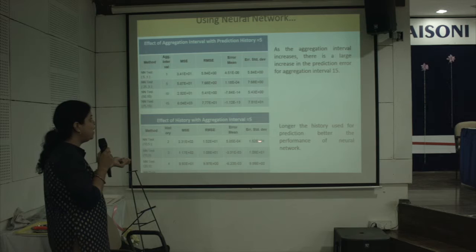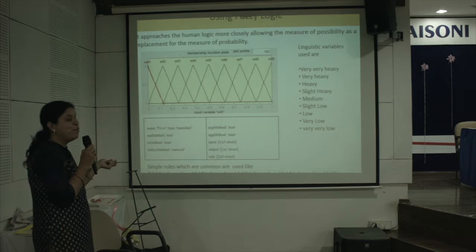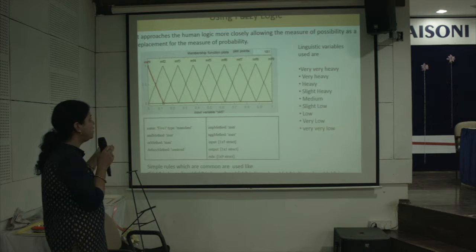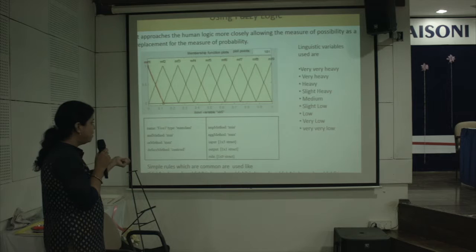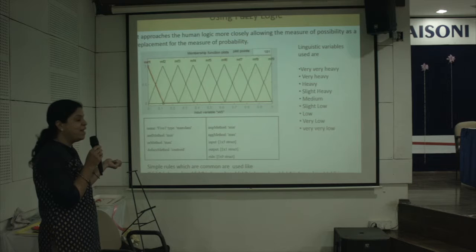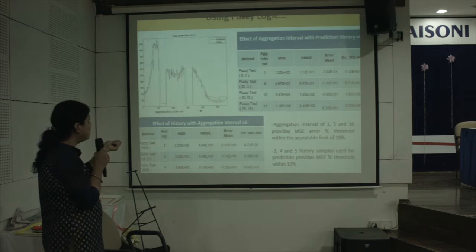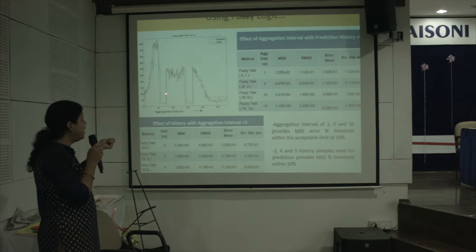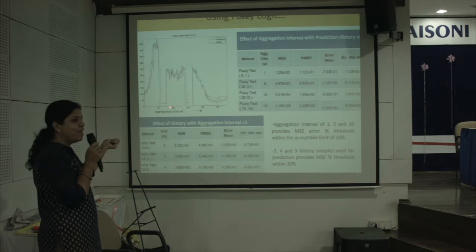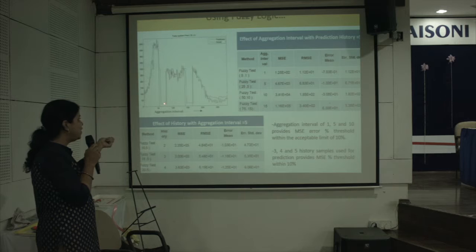Fuzzy logic approaches human logic more closely, allowing the measure of possibility as a replacement for probability. Nine linguistic variables are used. The defuzzification method uses the centroid-based method, which returns the center of the area under the curve. In the actual versus predicted plot, the forecasted count follows a band-like structure; since the centroid-based defuzzification is used, it does not follow zero count but remains at the centroid value within that band. More linguistic variables defined leads to better prediction performance.